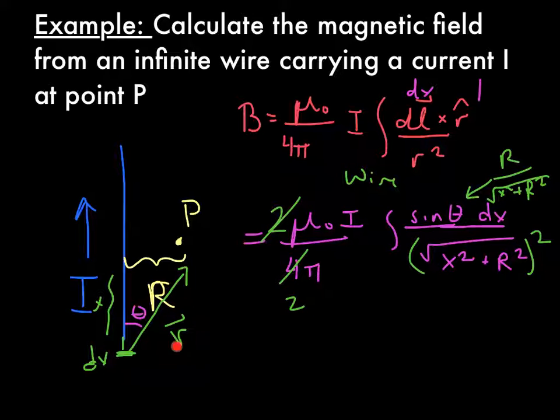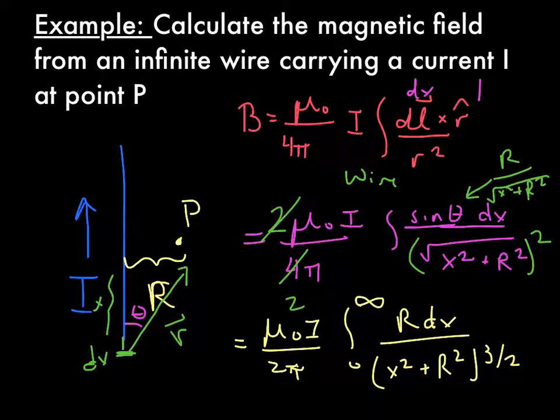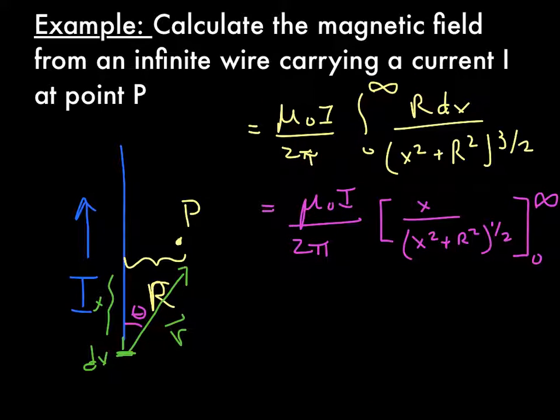We also replace this little r right here, this distance, with square root of x squared plus r squared. So now our equation is going to look something like, so we pulled out our constants, we integrate from 0 to infinity, r dx over x squared plus r squared to the 3 halves. So we integrate this through the magic of calculus. And you get mu naught i, x over square root of x squared plus r squared, evaluating 0 to infinity.